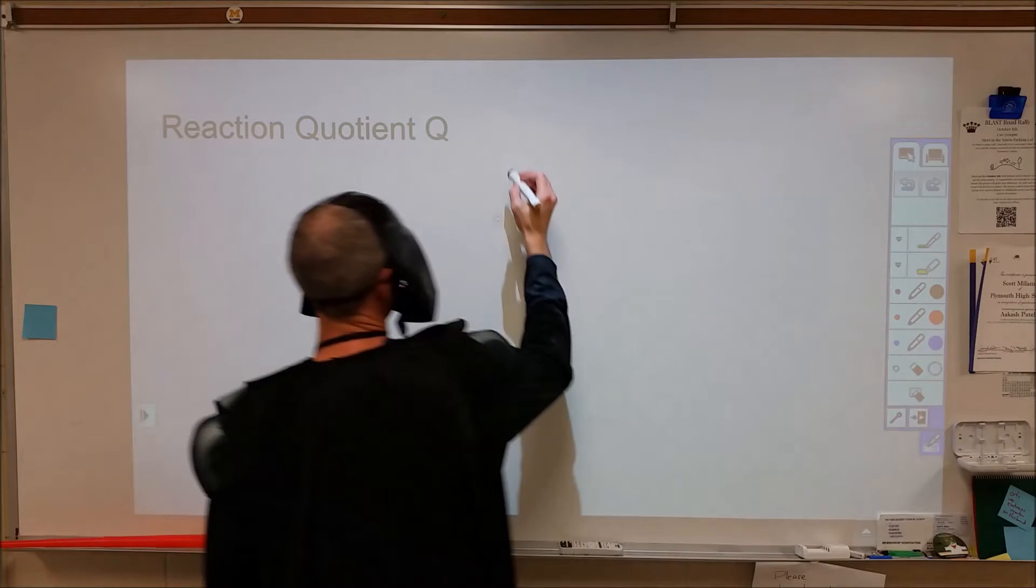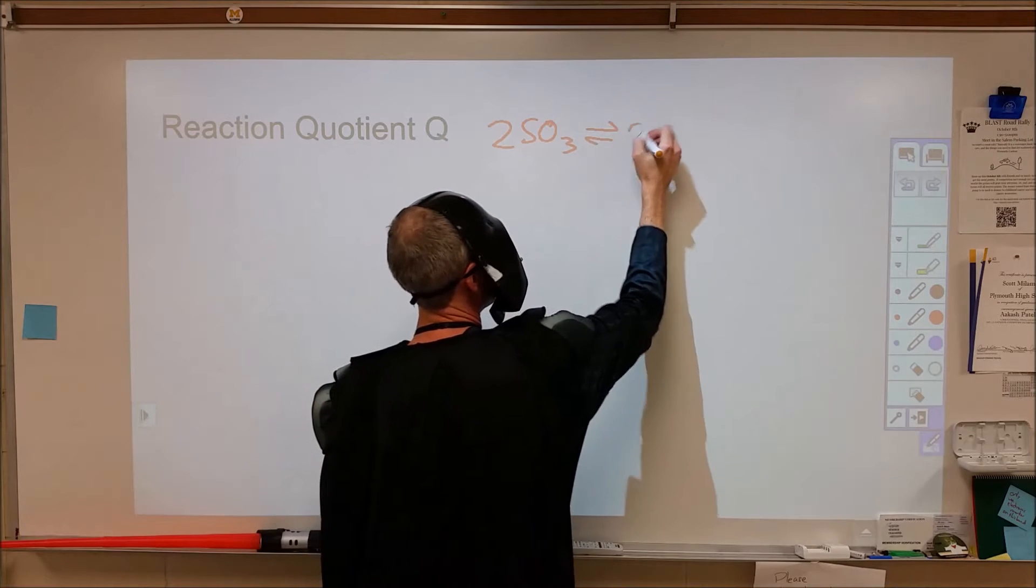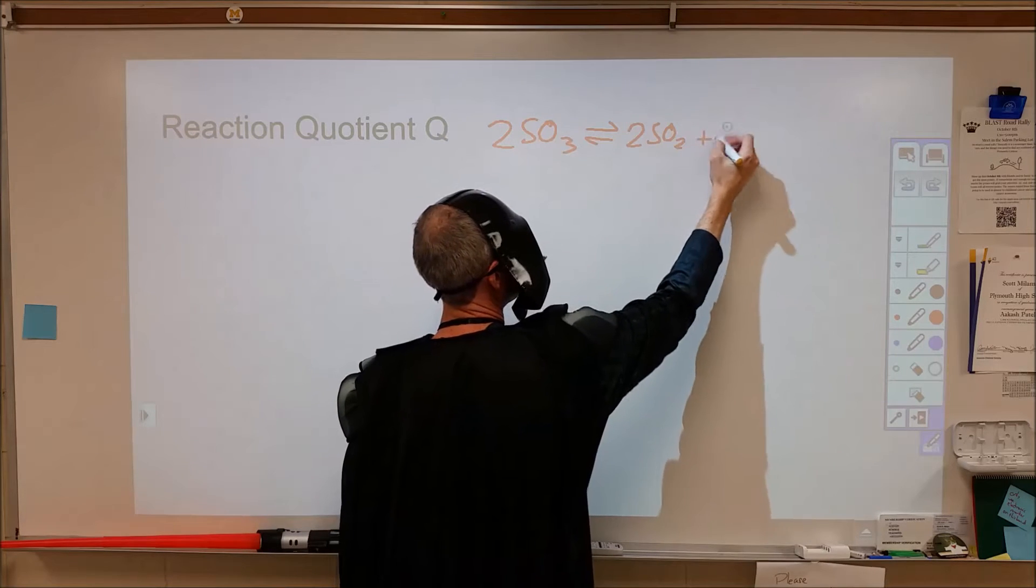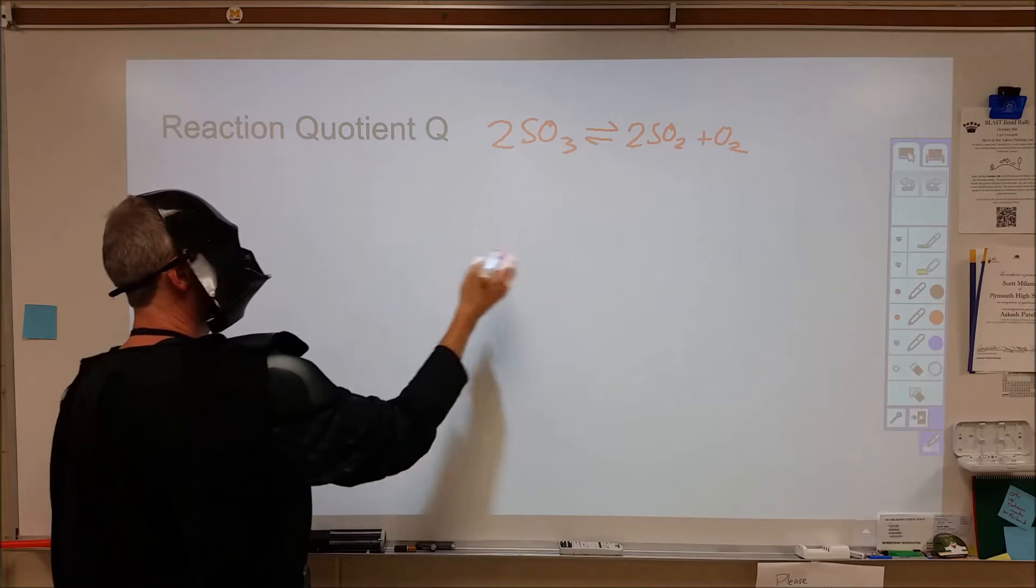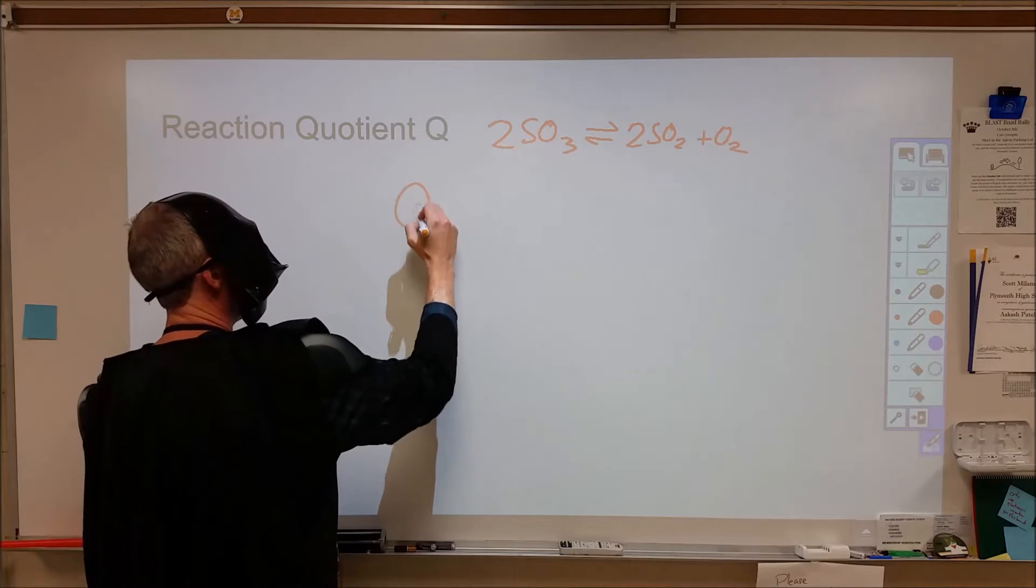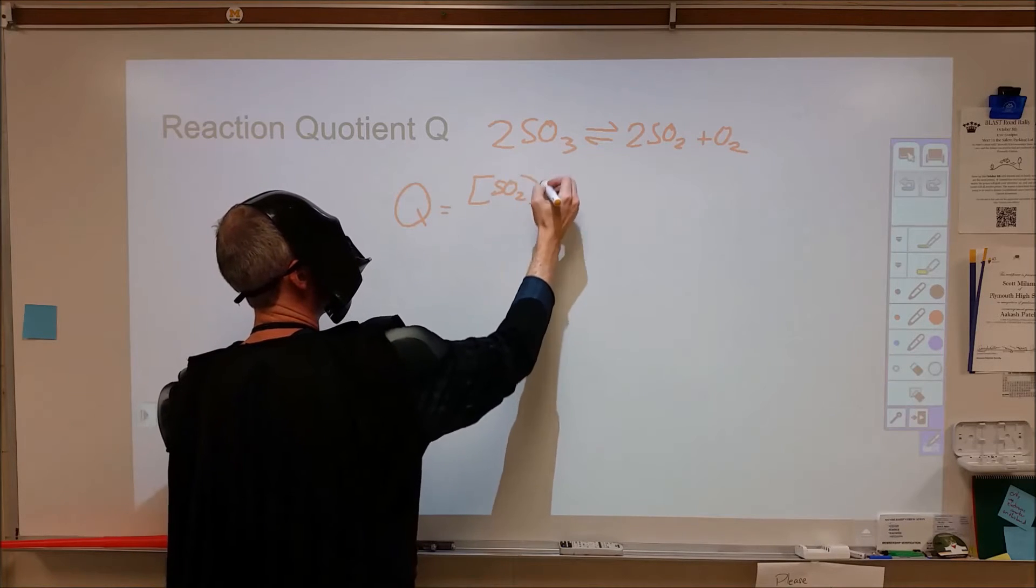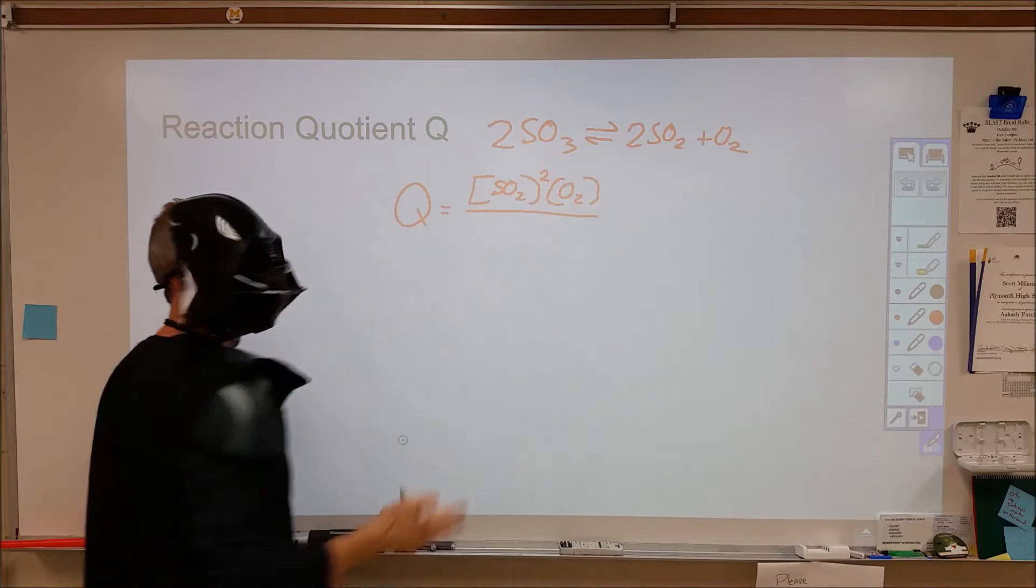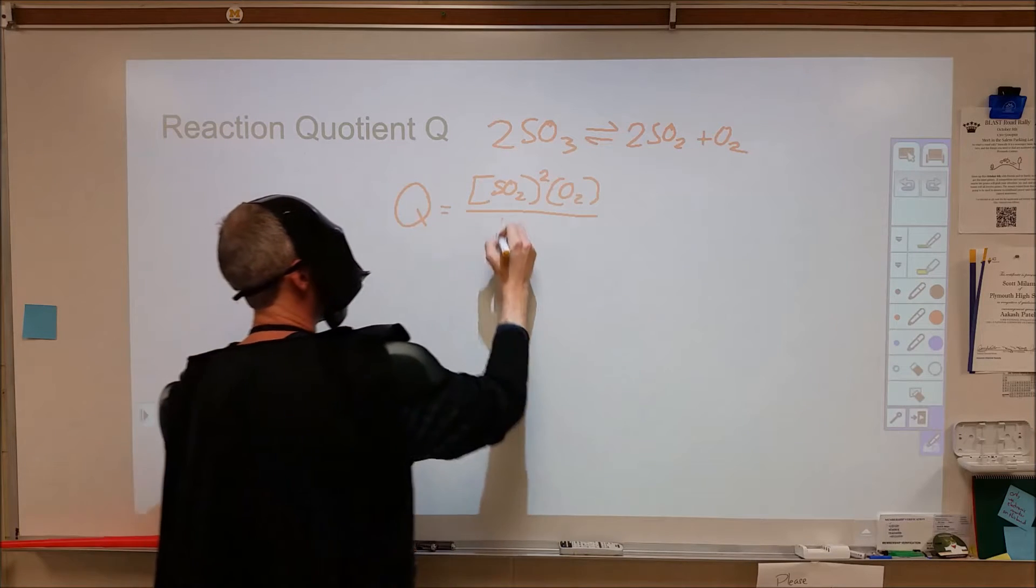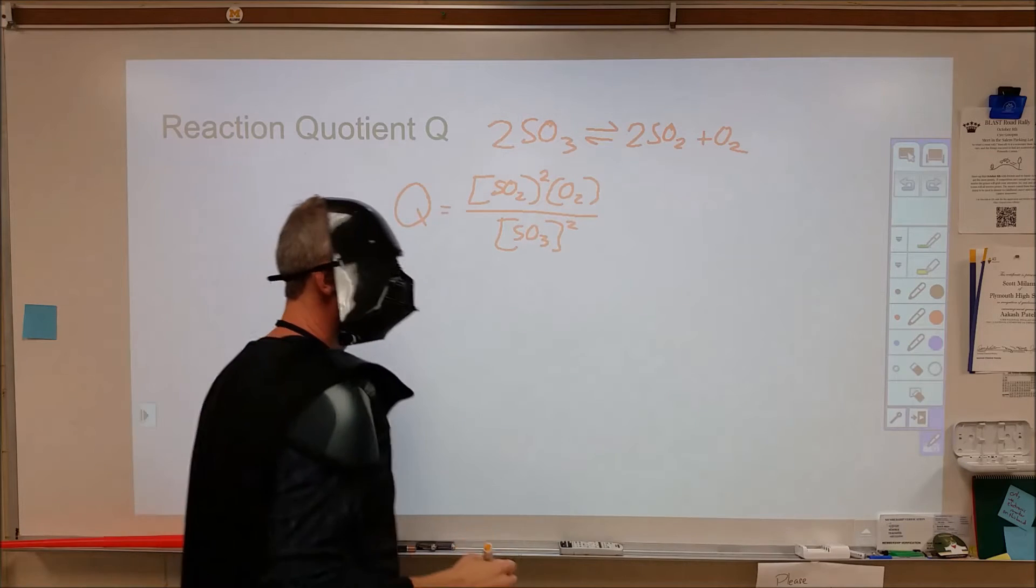In our previous example, we had looked at a reaction where sulfur trioxide had decomposed into forming sulfur dioxide and oxygen, all gases. For the reaction quotient, we would take the equilibrium expression where we are not necessarily at equilibrium. We're going to run a calculation to evaluate which is faster, the reverse rate or the forward rate, or are we at a point where the two rates are equivalent.